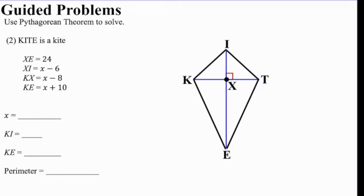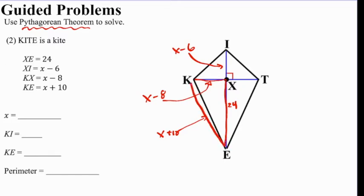So here's problem 2. Problem 2 is asking that we use the Pythagorean theorem to solve. And we see that we have XE is 24, XI, so this segment here, is x minus 6. KX, which is this segment here, is x minus 8. And KE is x plus 10. So we're asked to use Pythagorean theorem. We need to know three sides of a triangle. I don't have anything for KI, but I do have these three sides of a triangle here. So that's what we're going to focus on.